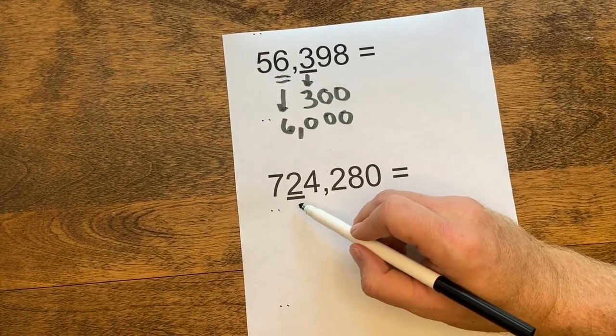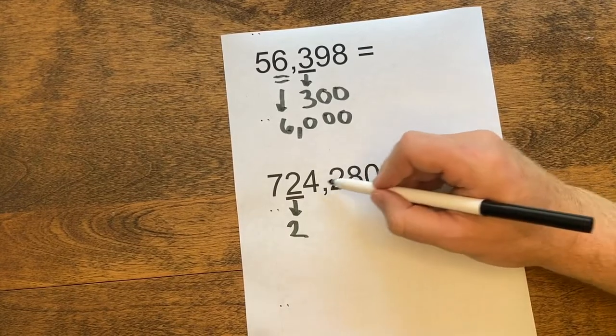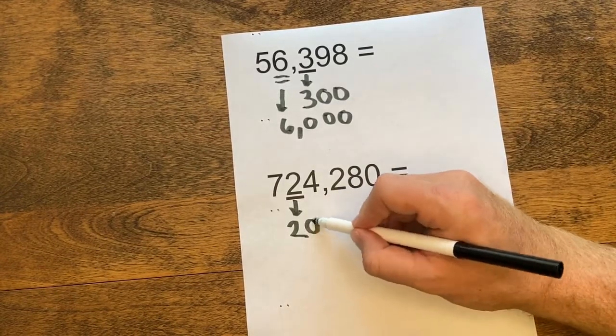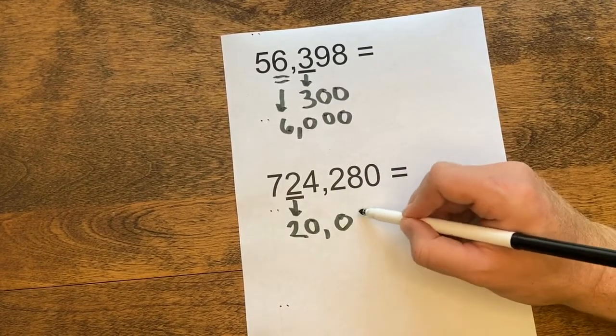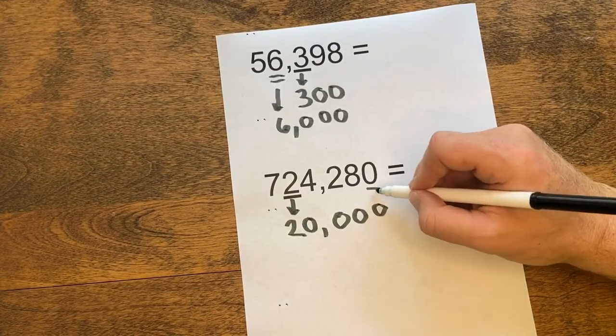Let's look at the next number. We'll pull down our 2. The 2 is in the 10,000 spot. We'll add zeros for all our other place value spots, so the value of that 2 is actually 20,000.